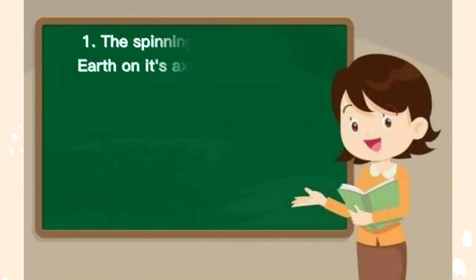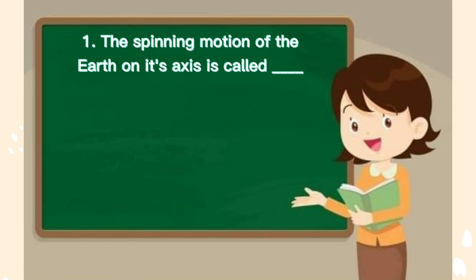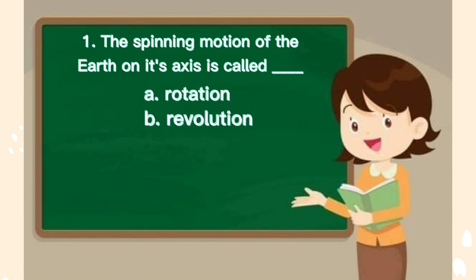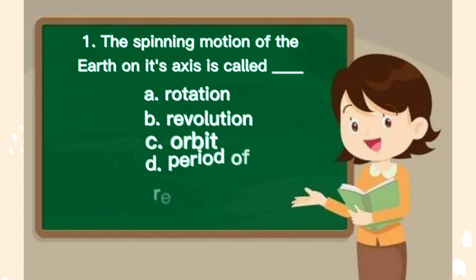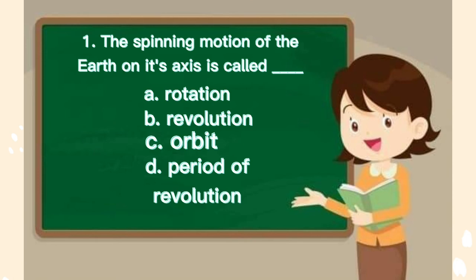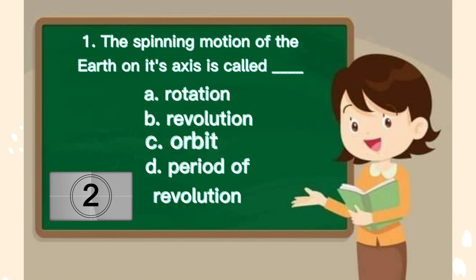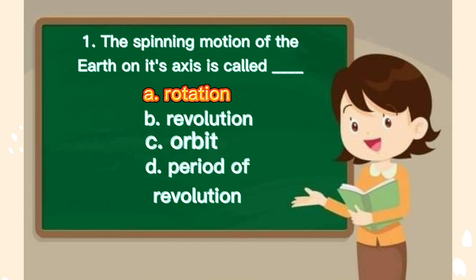Number 1. The spinning motion of the earth on its axis is called blank. A. Rotation, B. Revolution, C. Orbit, D. Period of revolution. The answer is A.